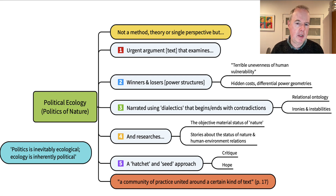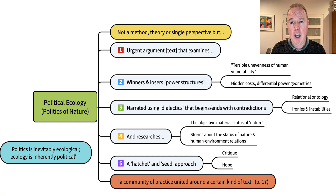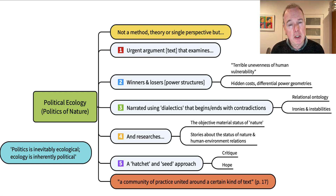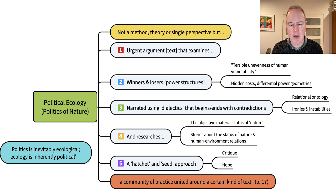It is an urgent argument that examines winners and losers — in other words, it looks at power structures. In particular, it's looking at the unevenness of human vulnerability, the hidden costs, and the differential power geometries at work when we study how humans are using the environment, and how the particular structures that shape that use are damaging to both the environment and to humans. It is a particular disposition — not a single perspective — which narrates this problematic using dialectics, beginning and ending with the understanding of contradictions.